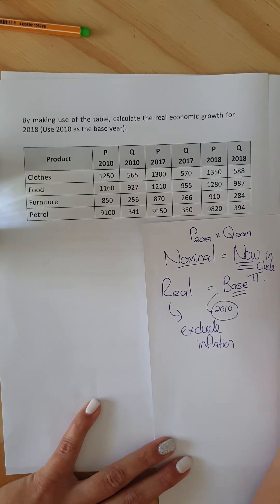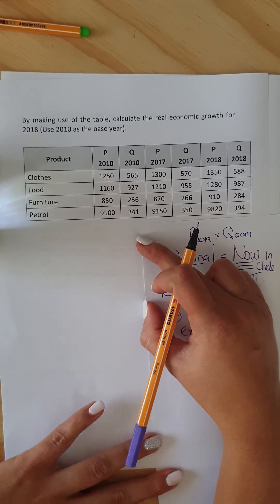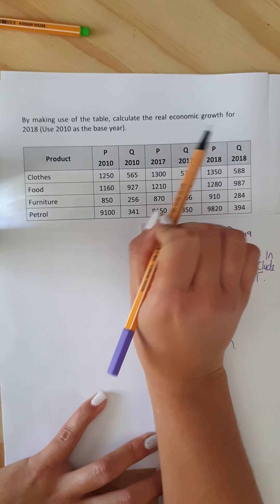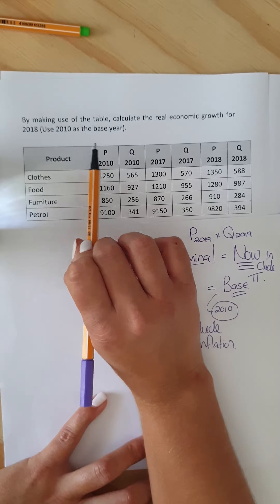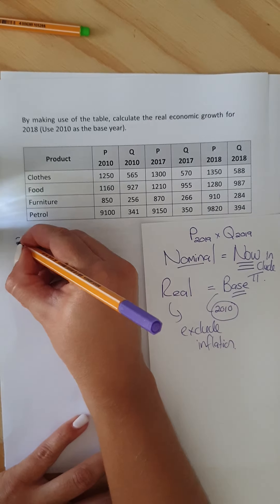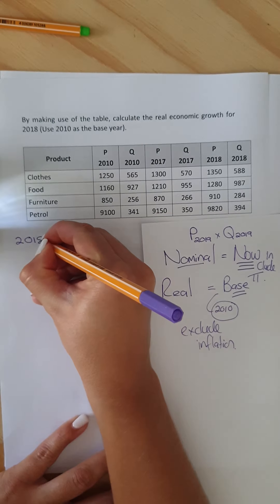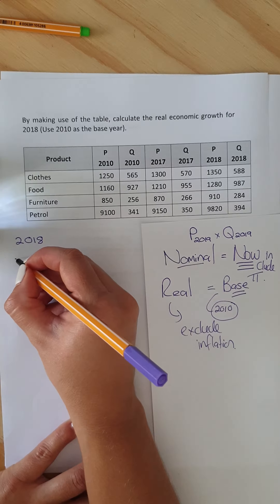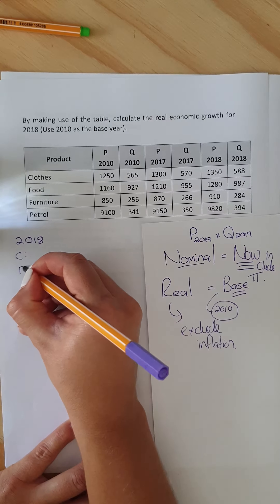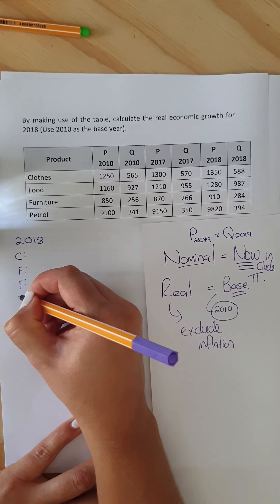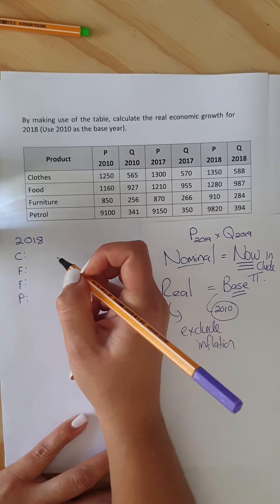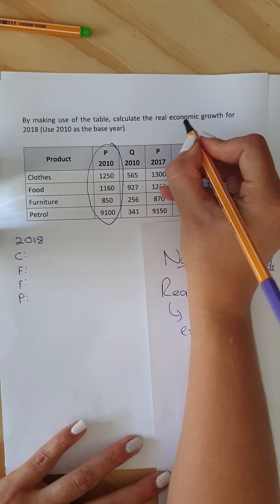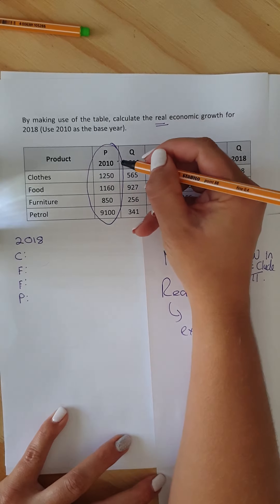So let's start by reading the question. Using the table, calculate real economic growth for 2018 and use 2010 as a base year. What you do is first take your current year, 2018, and then use 2010 as the base year. We start with the four products: clothes, food, furniture, and petrol.